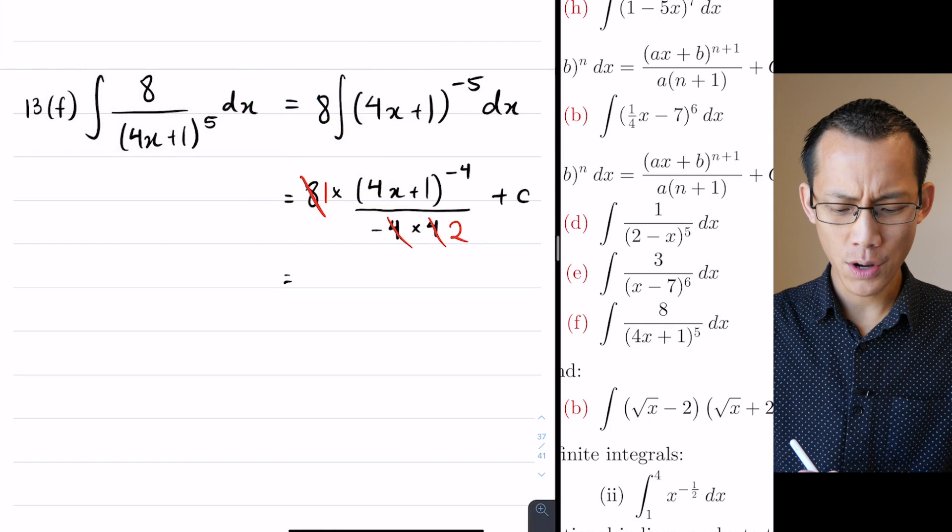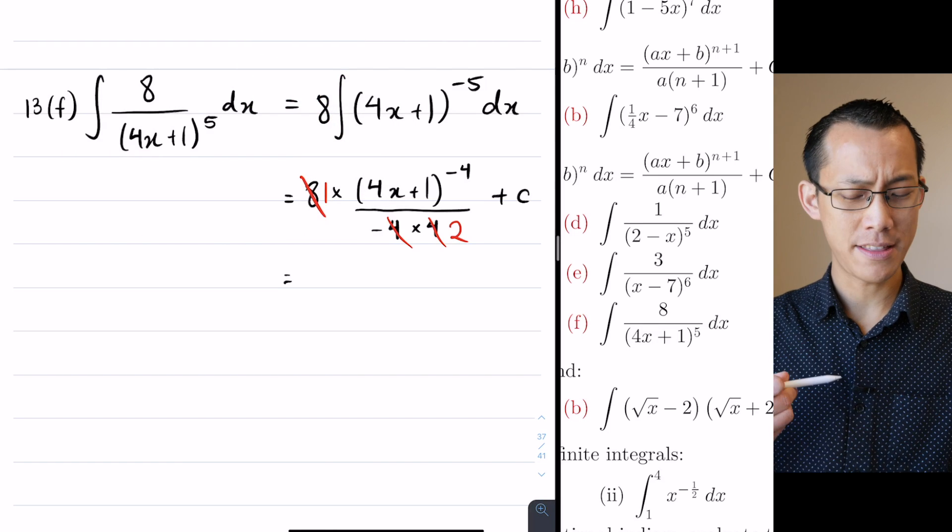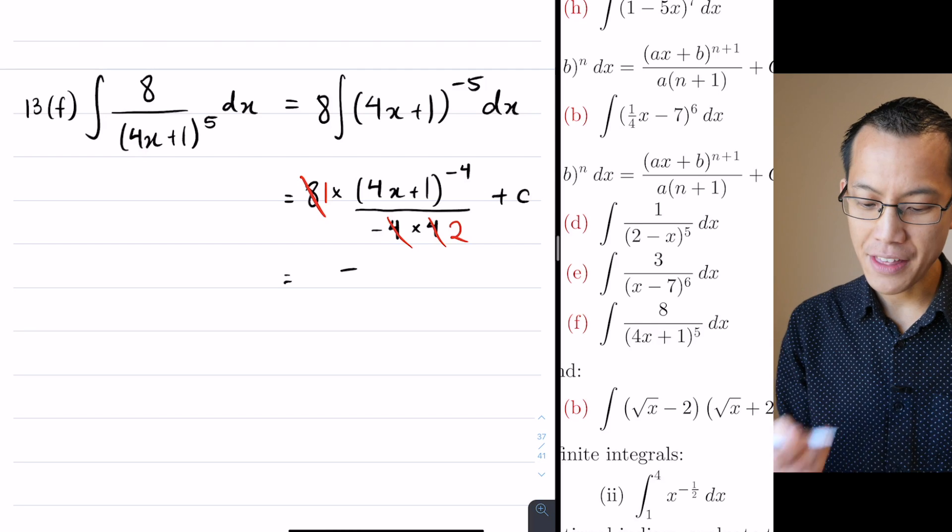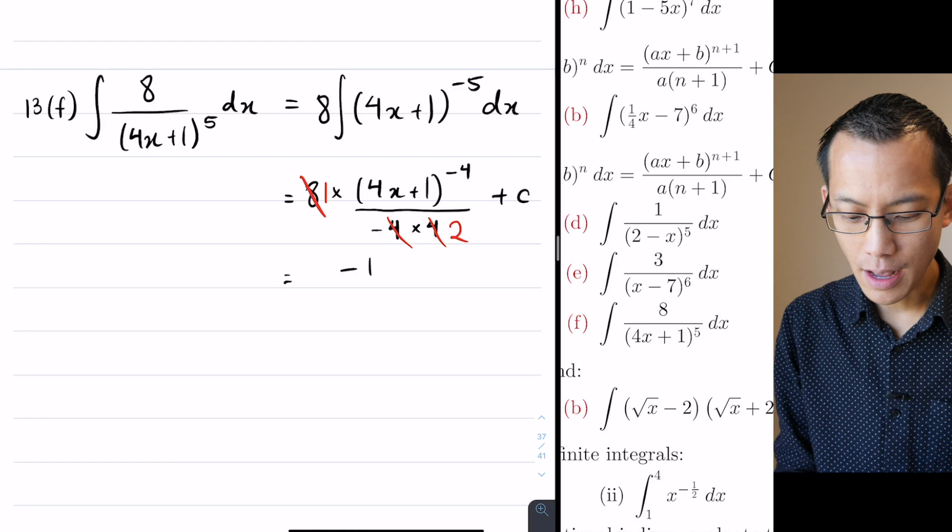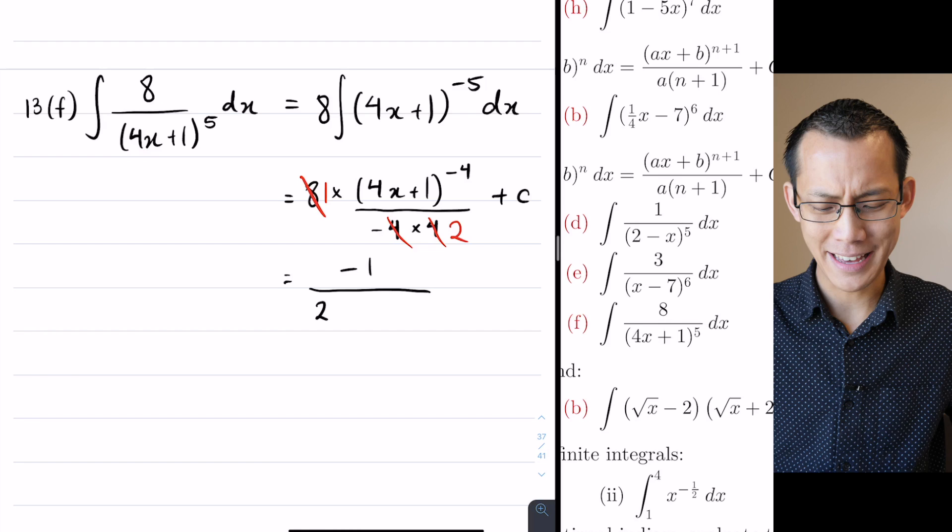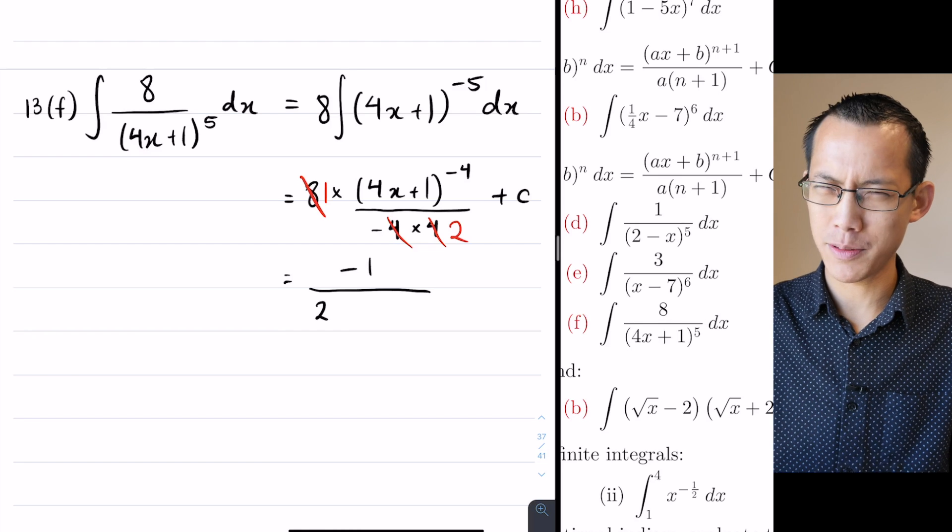And then if that's 16 down the bottom, then it leaves me with a factor of 2. You've also got a negative on the bottom, but I think it's easier to write that on the top. So I'm going to write a -1 on the top.